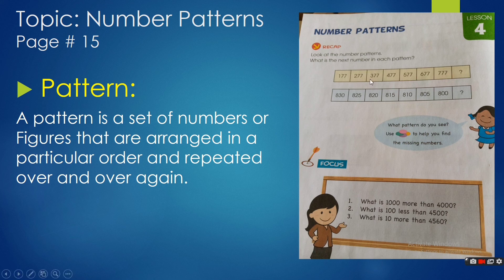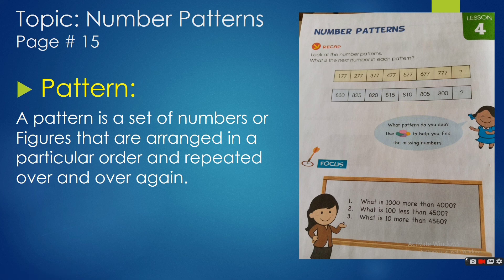Look at this example: 177, 277, 377, 477... which digit is getting changed? The ones place is the same in all, and the tens place is the same. It is the hundreds place that is changing — 100, 200, 300, 400, 500. So what will be the next number? It will be 877. By observing the pattern, you need to find out which place value is changing and then write the next number.